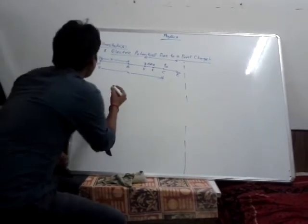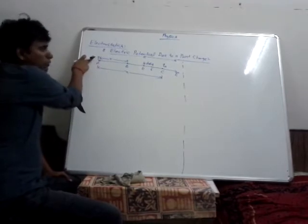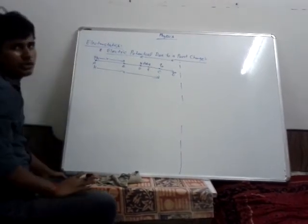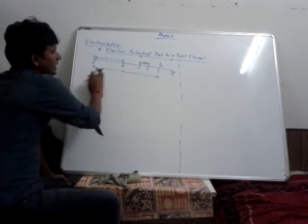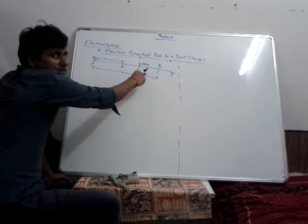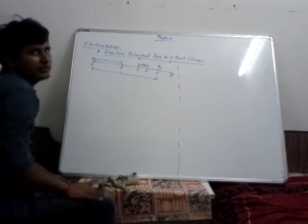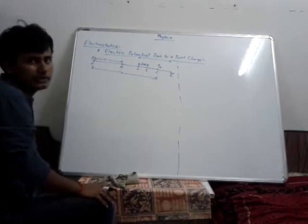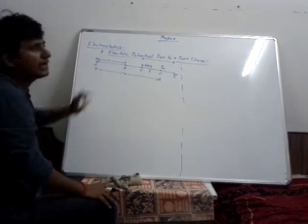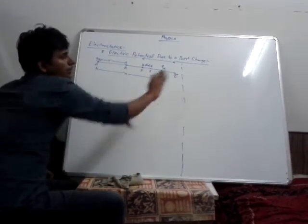To explain this point, we have considered a charge at point A as Q, and at point C we have considered another charge as Q0. The distance between point A and C is going to be X, and two more points we have considered on this line as D and E. The distance between D and E is going to be a small distance dx. The distance between A and B we have considered as R, and the direction of the electric field is going to be outward.